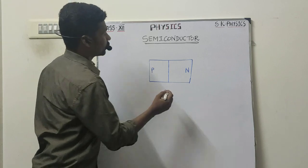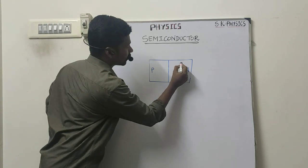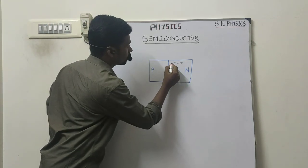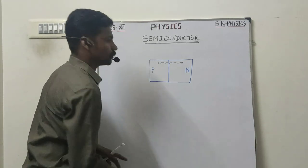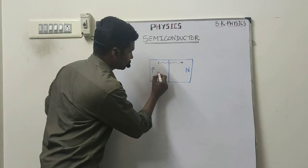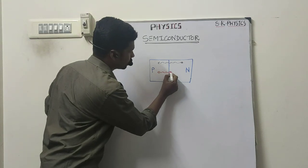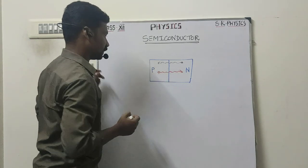Then from n-region side the electrons will move towards p-region side. Like that, from p-region the holes will move towards the n-region side.